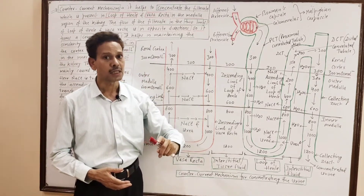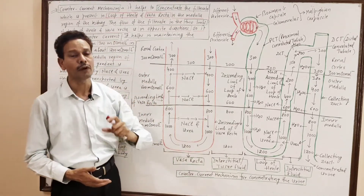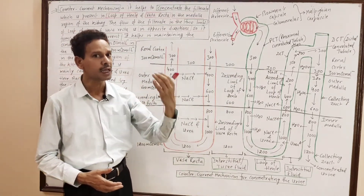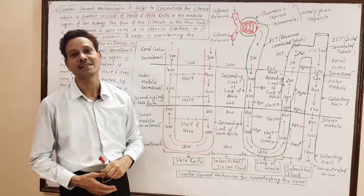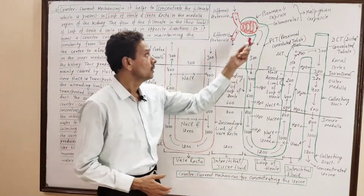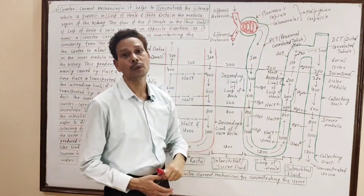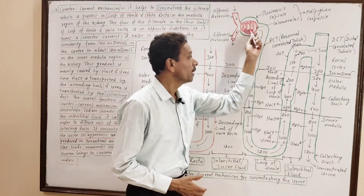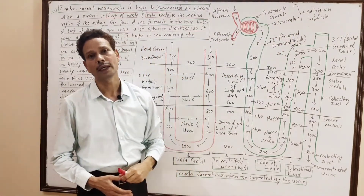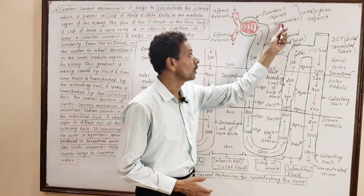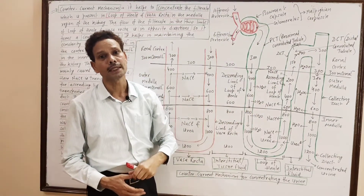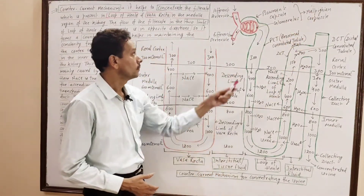In this counter current mechanism, first of all we will discuss the structure of the nephron. The nephrons are structural and functional units of kidneys. Each nephron has the following parts: Bowman's capsule, which contains a network of blood capillaries called the glomerulus. Both Bowman's capsule and glomerulus collectively constitute a body called the renal corpuscle.